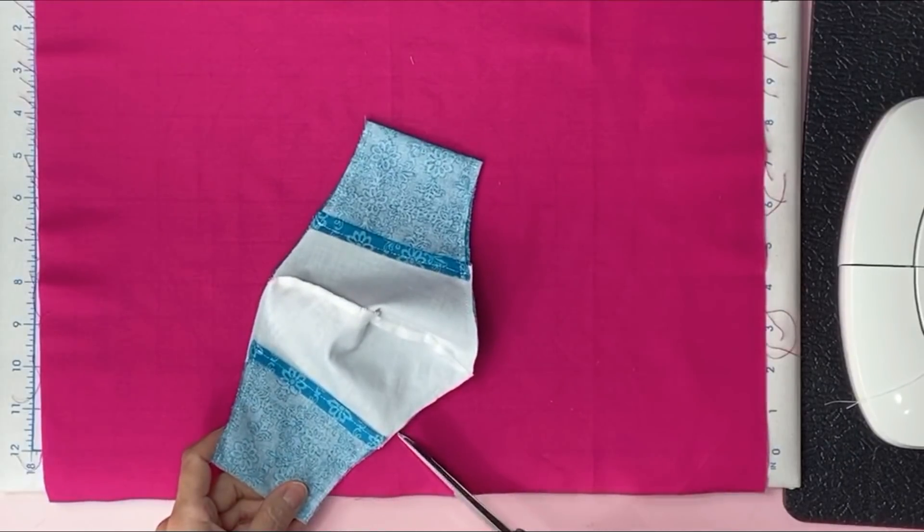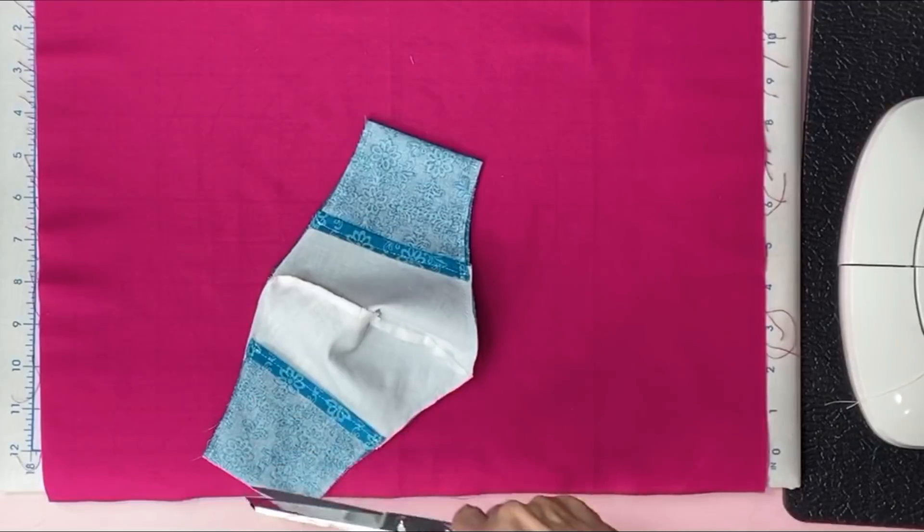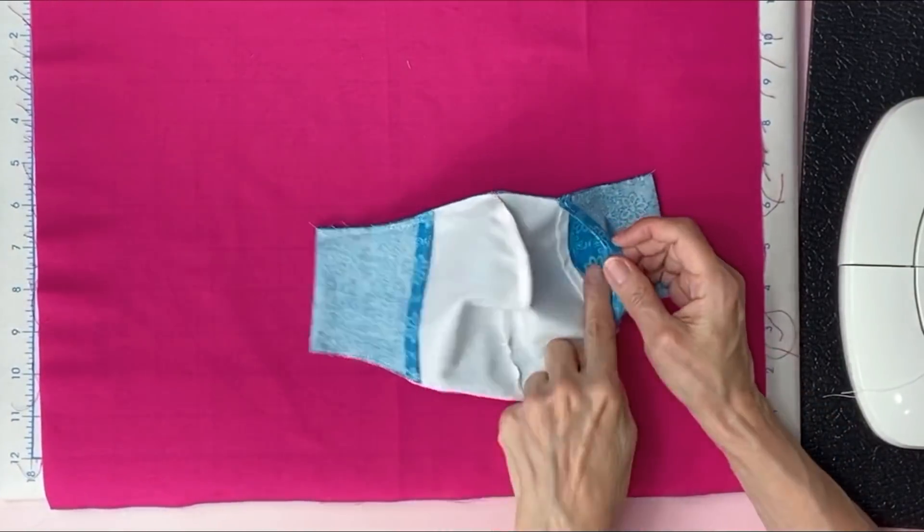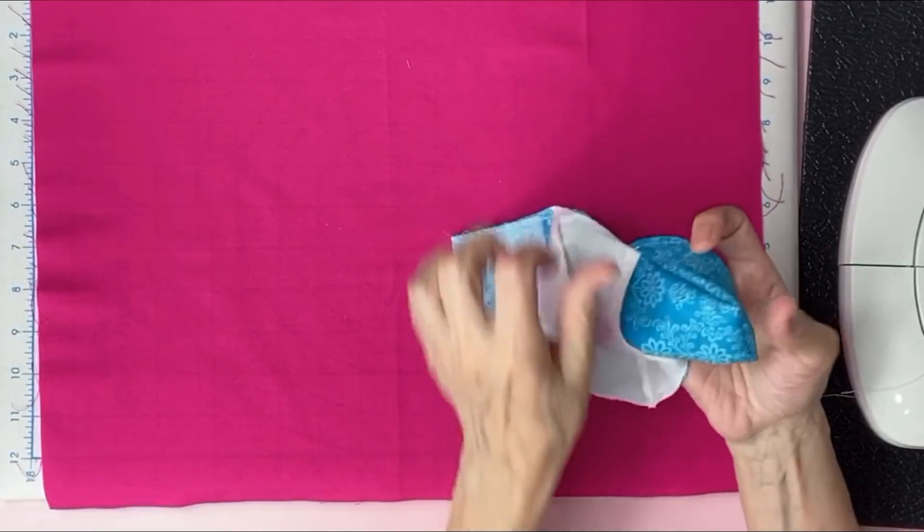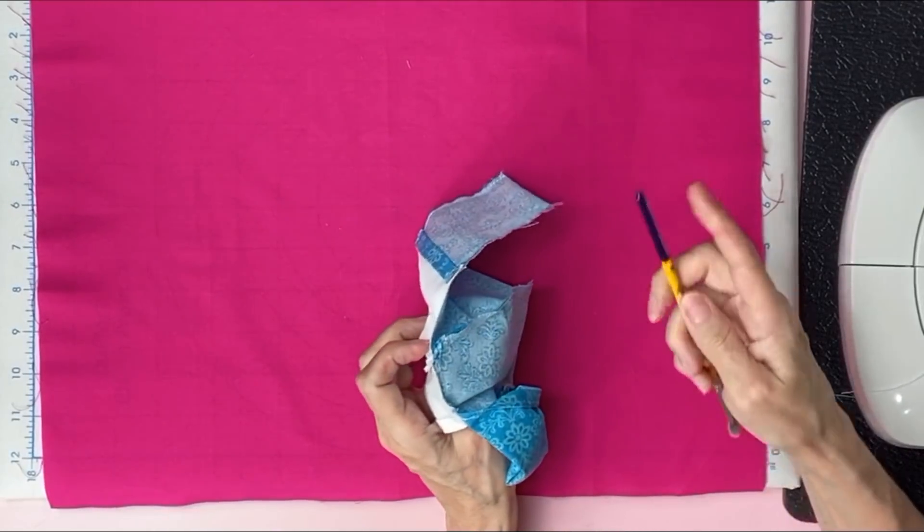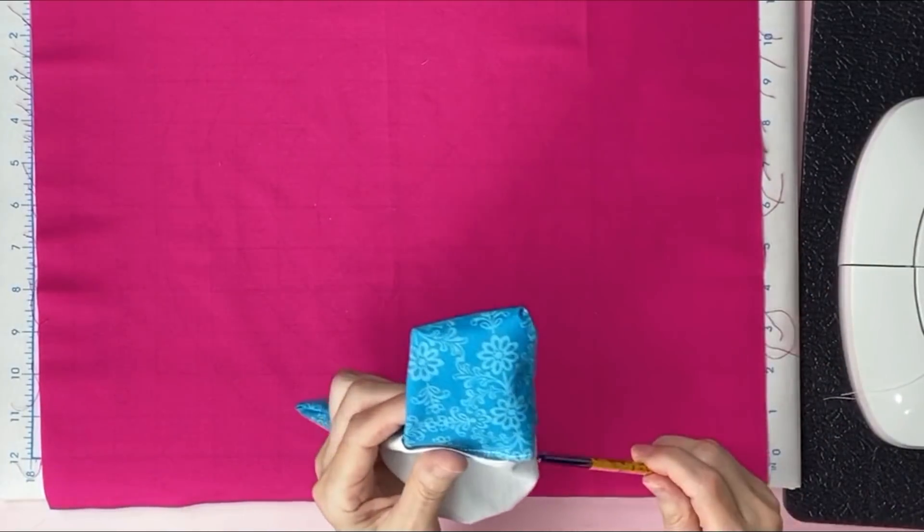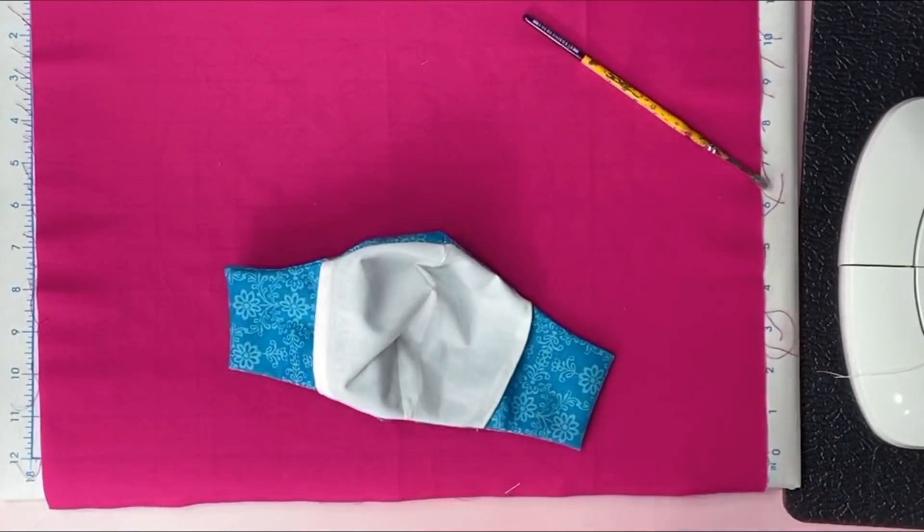Clip your curves. Go all the way down. And do the other side. And then grab an opening. You can choose either side. Flip it inside out. Then you need something that is not pointy to push out the corners. I'm using the back end of an old paintbrush. Push out your corners. Alright. Now you want to press it.